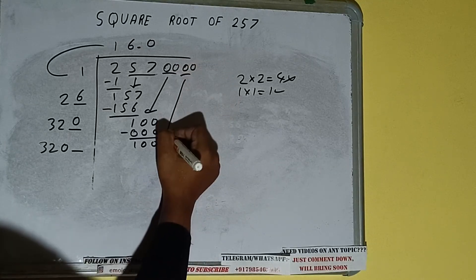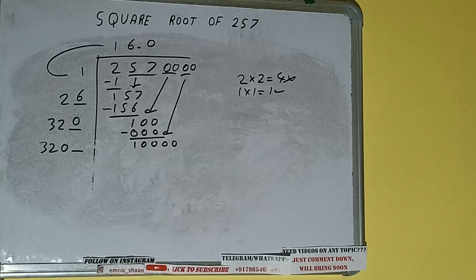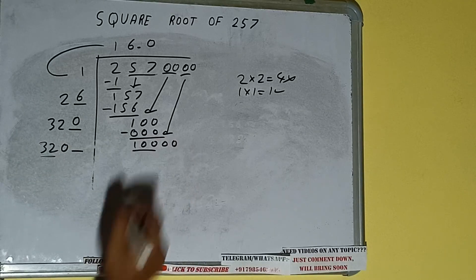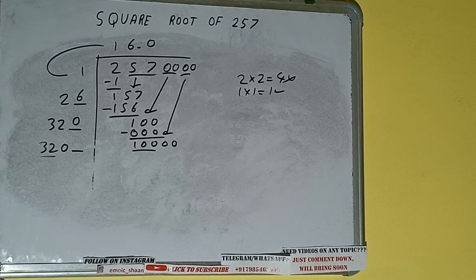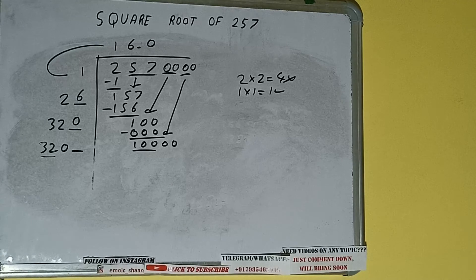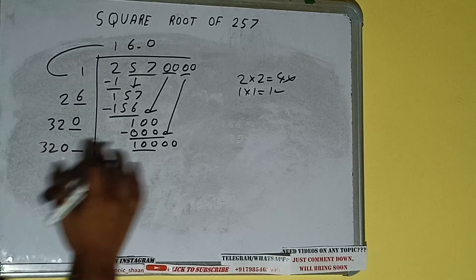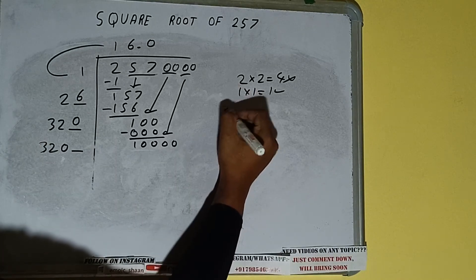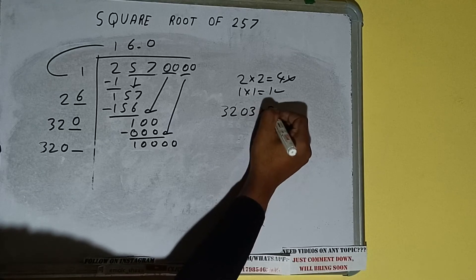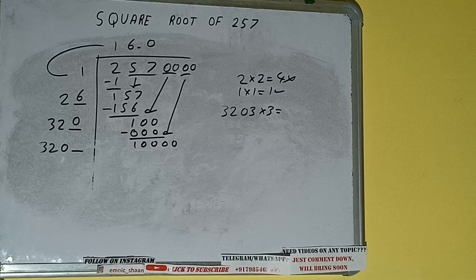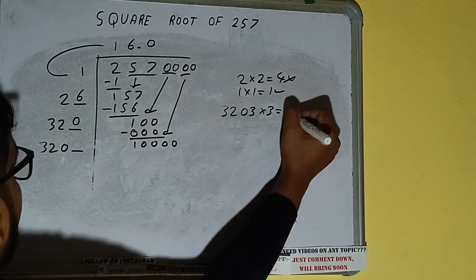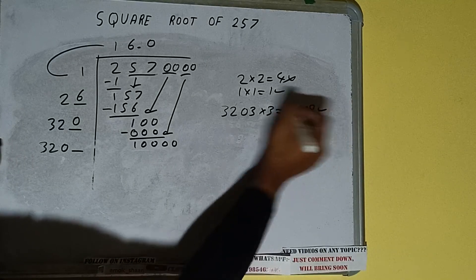So bring the next pair of zeros down and it will be 10,000. Now compare this 32 with this 100, so 32 three times is 96, so we can try three times. 3203 into 3 we can try and we'll be having 9609, which is good to take.